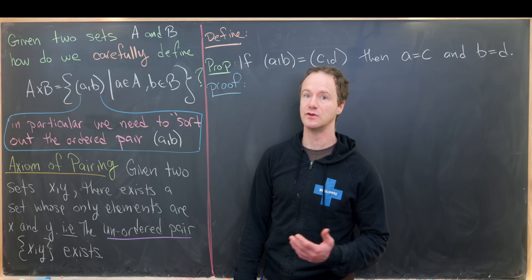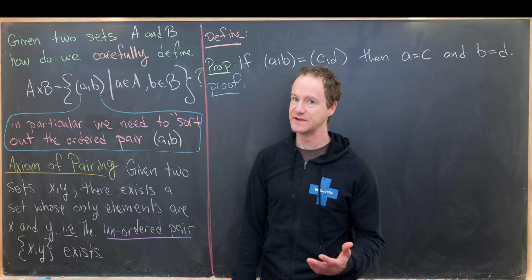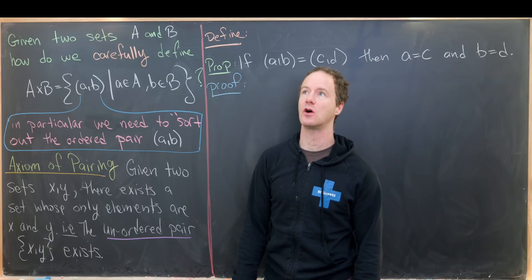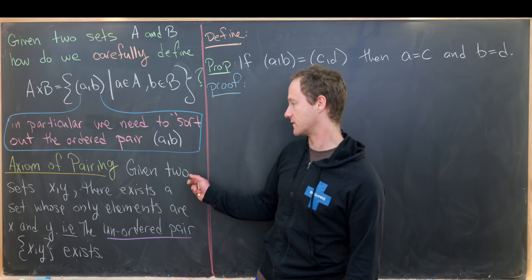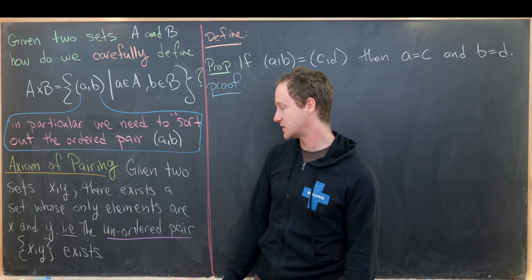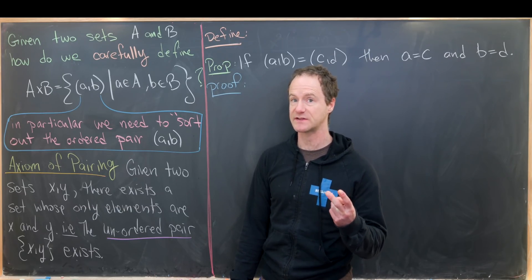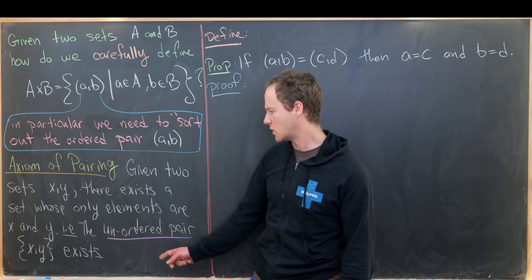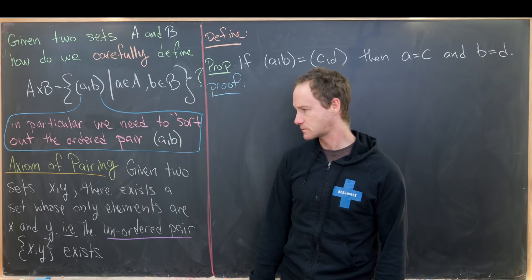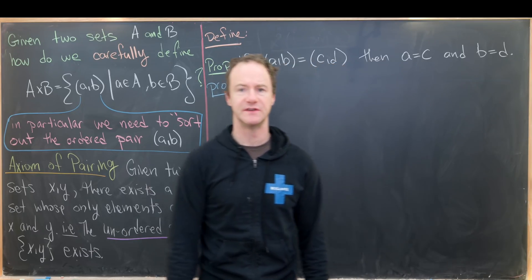In order to do that, we'll use one of the axioms from Zermelo-Fraenkel set theory known as the axiom of pairing. The axiom of pairing doesn't say that there exists an ordered pair — that would be a little too easy. It says there exists something called an unordered pair. This axiom says: given two sets X and Y, there exists a set whose only elements are X and Y — a set that only has two elements, X and Y. So there is an unordered pair, the set containing just X and Y and nothing else.